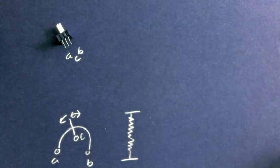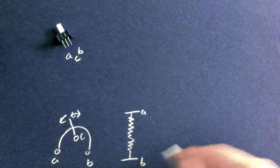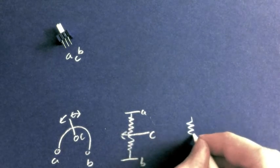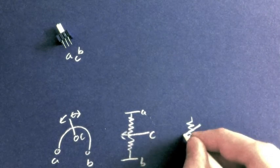So what this means is if we unroll it into a circuit diagram, we get A on the top, B on the bottom, and then C, which moves up and down. And this leads us to the circuit diagram for the potentiometer, which looks like that.